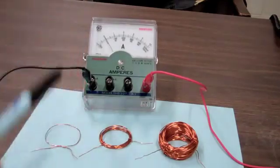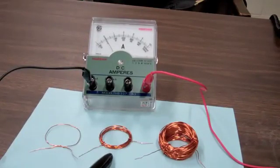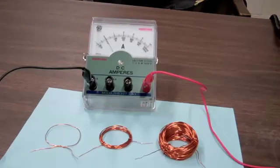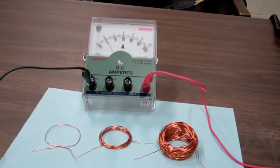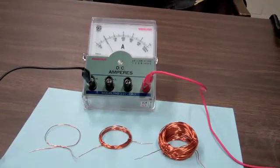I have an ammeter here and I have three coils: a coil with one loop, ten loops, and one hundred loops. I also have a bar magnet, and I will start by connecting the single loop coil to the ammeter.